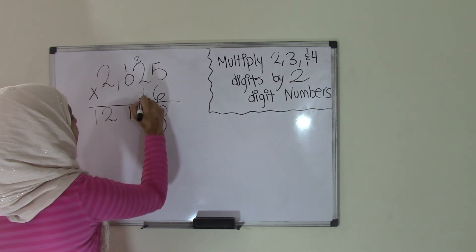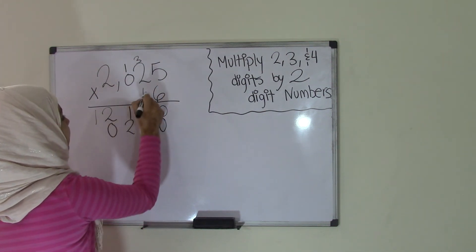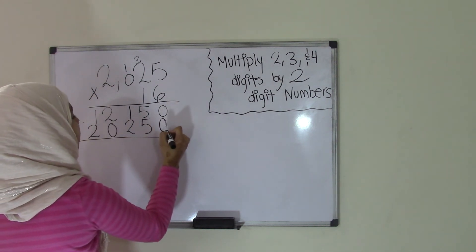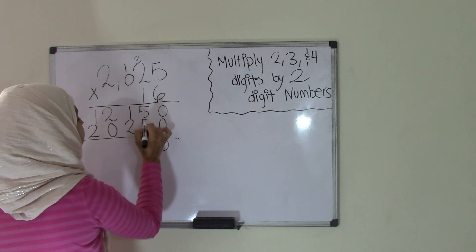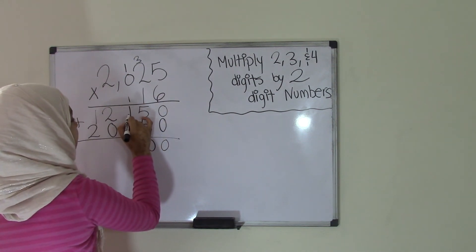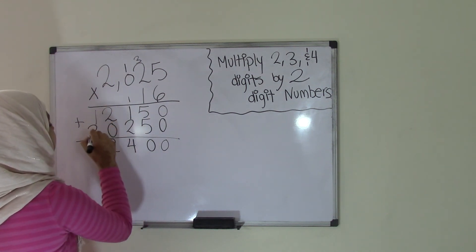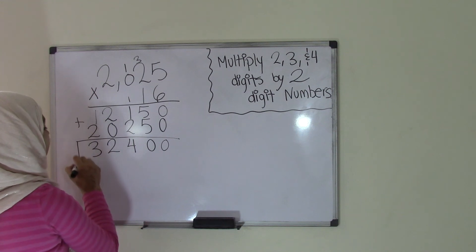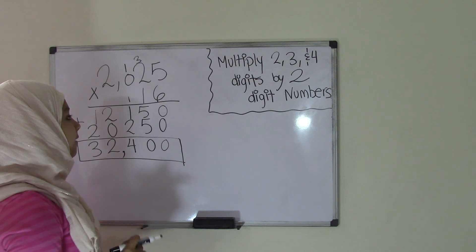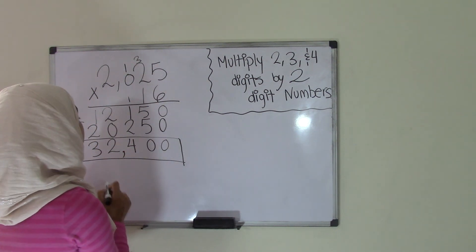1 times 5 is 5. 1 times 2 is 2. 1 times 0 is 0. And 1 times 2 is 2. Add the two products together. 0 plus 0 is 0. 5 plus 5 is 10 — put 0, carry the 1. 2 plus 1 is 3, plus the 1 is 4. 2 plus 0 is 2. And 1 plus 2 is 3. We get our product of 32,400. That means 2025 multiplied by 16 gives us a product of 32,400.